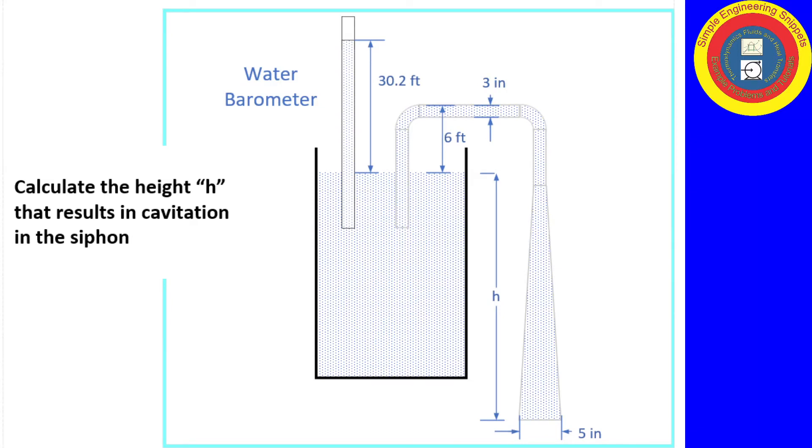All right, welcome to another instructional video. In this example problem, we will use Bernoulli's equation to find a height h, as shown here, that just results in cavitation in the siphon, which is taking a suction from a large tank and discharging to atmosphere.